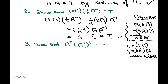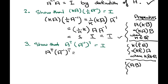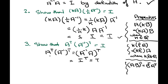We'll use a property of transpose: (AB)ᵀ = BᵀAᵀ. Applying that property from right to left, A transpose times A inverse transpose can be written as (A inverse times A) transpose. Since A inverse times A equals I, this becomes I transpose. Because I is a symmetric matrix, I transpose equals I, which is exactly what we wanted. That proves number 3.